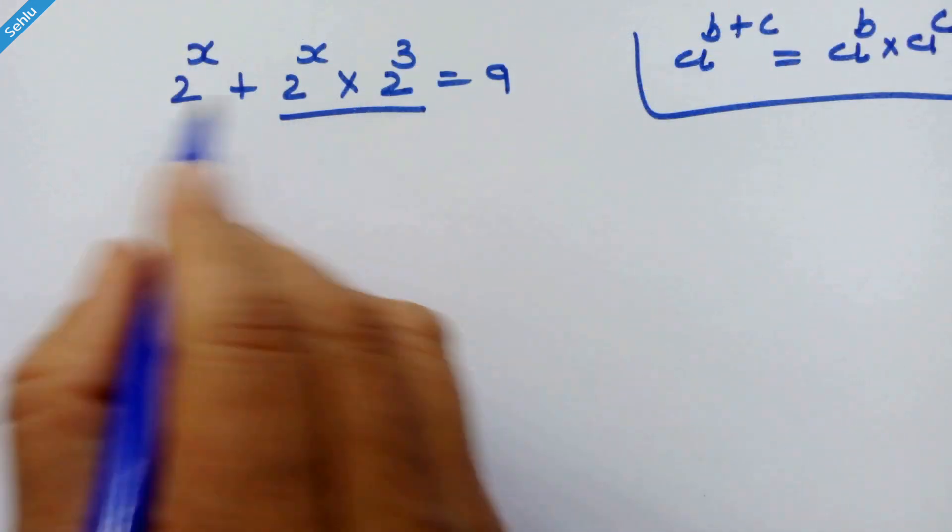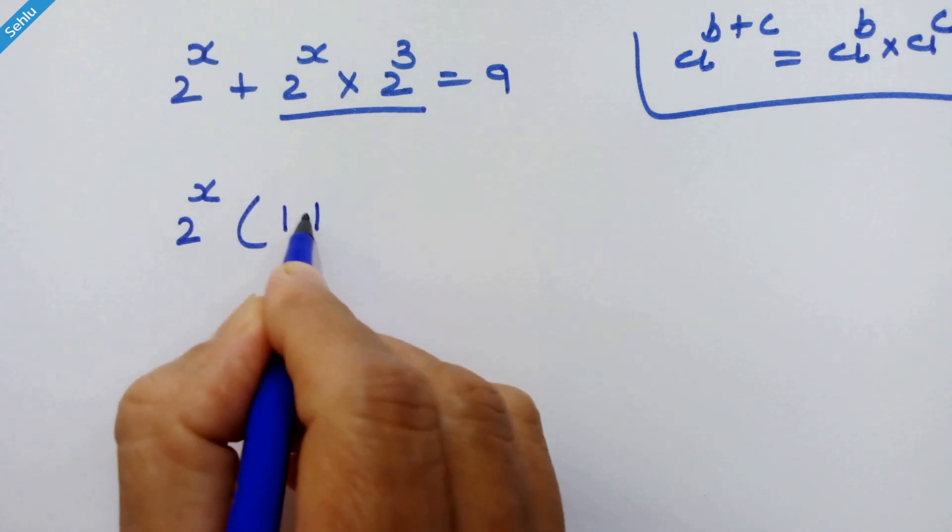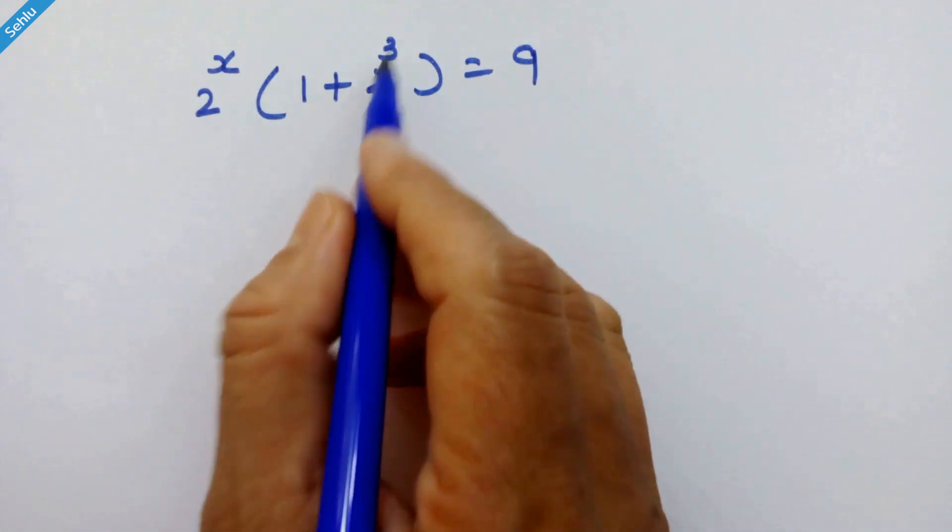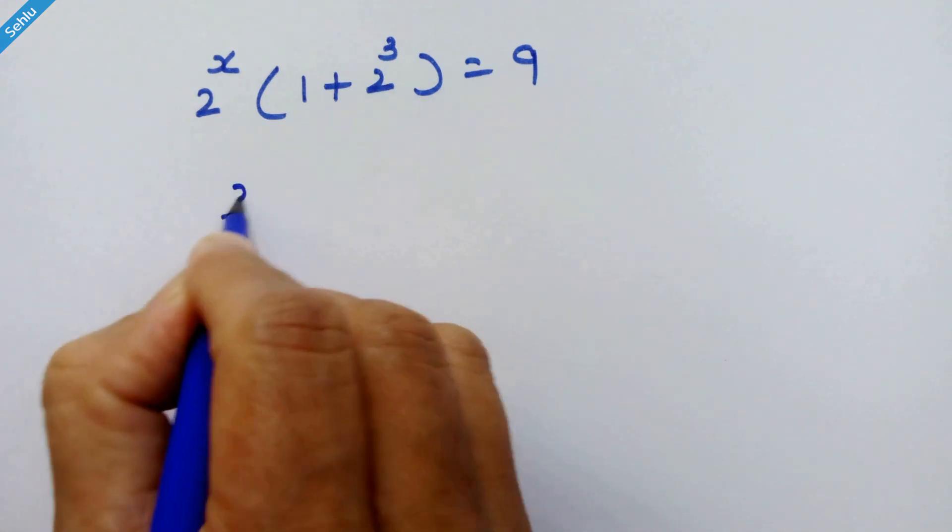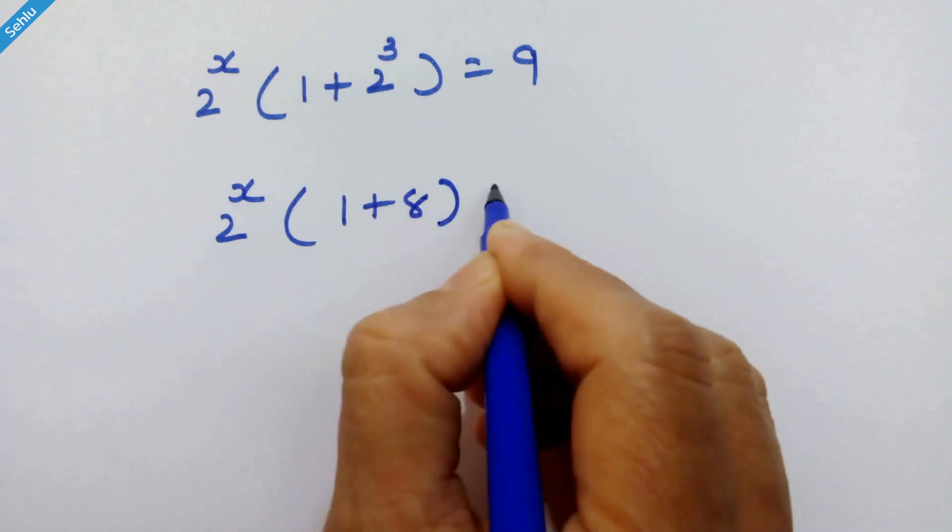Now we can take 2 raised to x common from here. So 2 raised to x into 1 plus 2 cubed is equal to 9. 2 cubed is 8, so we can write 2 raised to x into 1 plus 8 is equal to 9.